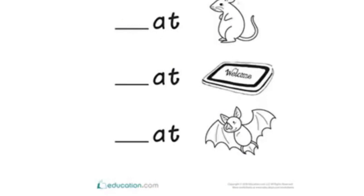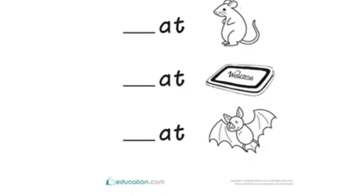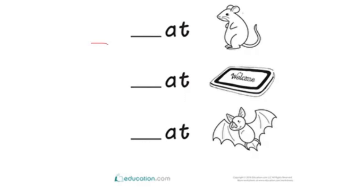Now let's do this exercise here. The first sound in the word is missing. We have at words, but the first sound in each word is missing. You need to look at the picture, see what picture it is, try to find out what sound is missing at the beginning of each word, and write it. The first picture is a rat. Rat begins with what sound? R — rat.